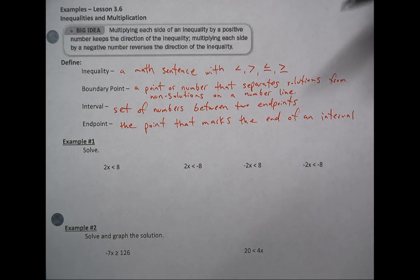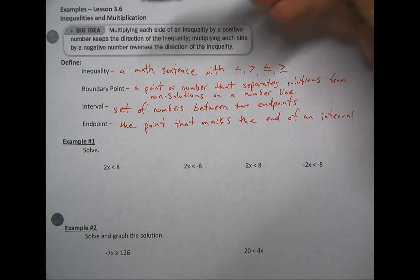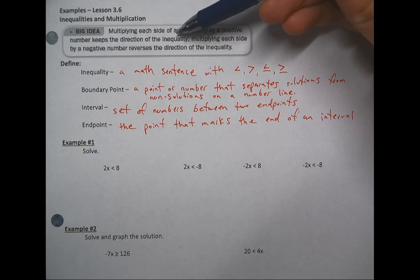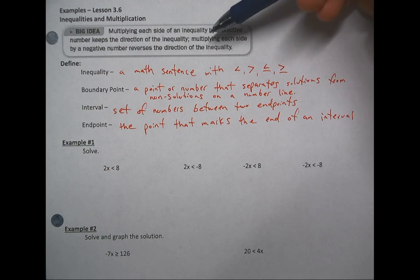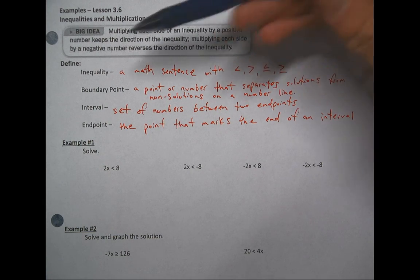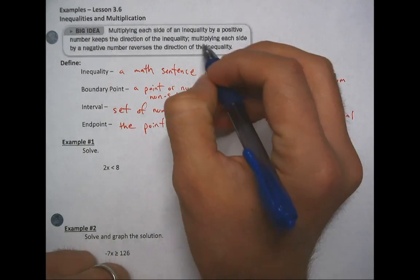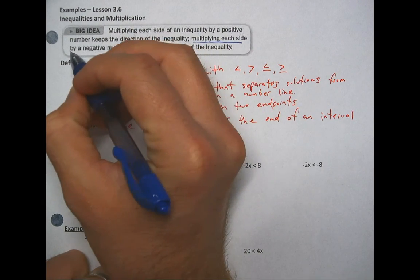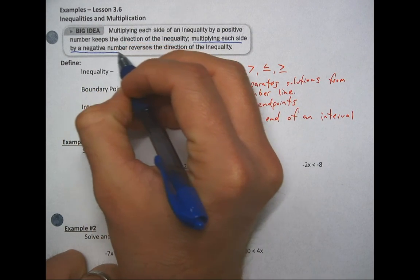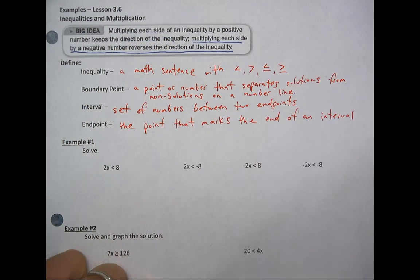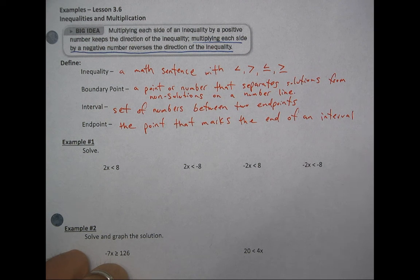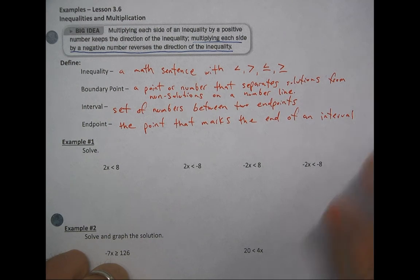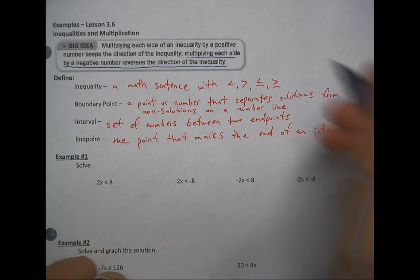The big idea: multiplying each side of an inequality by a positive number keeps the direction of your less than or greater than, but multiplying each side by a negative number reverses the direction. That's the most important part. So when we go to solve an inequality, if we multiply or divide both sides by a negative number, it reverses the direction.